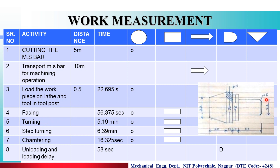Facing the MS bar takes 56.375 seconds. You have to inspect that the facing is correct — that is why both the operation symbol and the inspection symbol are used. Next, turning the MS bar up to a diameter of 30 mm takes 6.39 minutes, followed by chamfering, which takes 16.325 seconds, and the chamfering angle must also be inspected.